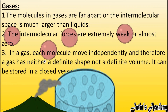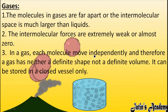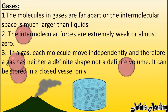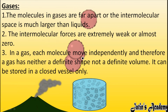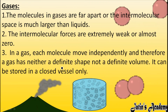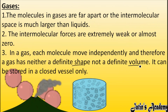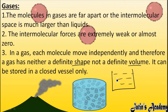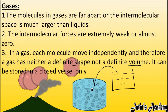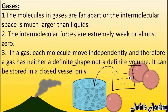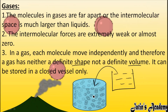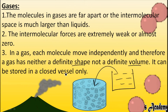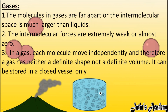Third point: in a gas, each molecule moves independently. Therefore, a gas has neither a definite shape nor a definite volume. Gas molecules move independently here and there, so gas has no definite shape. Gas also has no definite volume — the same amount of gas can occupy different volumes depending on the vessel, so volume is not definite as we change the container.